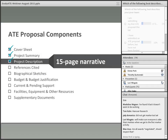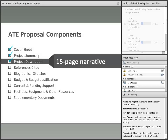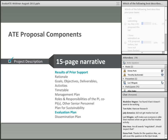Next comes the project description — the 15-page narrative that is really the bulk of your proposal, where you present your ideas and your work plan. The key elements are listed in the ATE solicitation. The two pieces where evaluation needs to be prominent are the results of prior support and, of course, the evaluation plan.